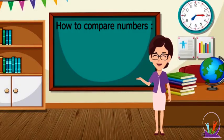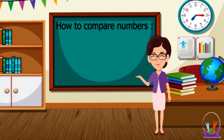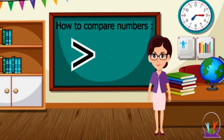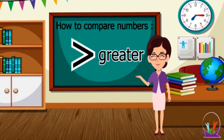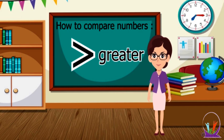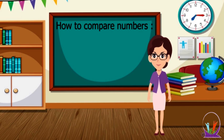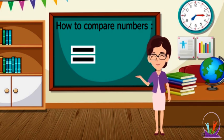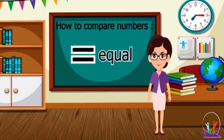How to compare numbers? This sign is the greater sign — it always eats the greater amount. And this sign is the equal sign.